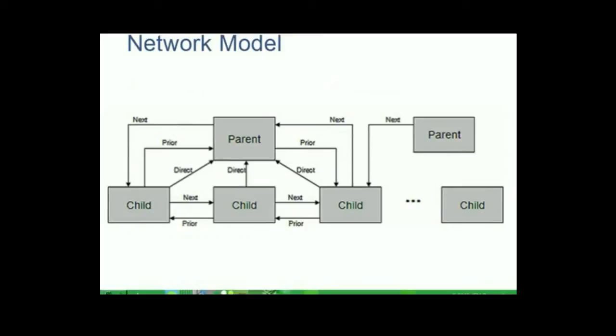In a network model, a child can have more than one parent and each record type points to each other with next, prior and direct pointers. The figure here shows the record types represented by rectangles in a codicil network. A collection of record types and keys form a codicil network or codicil database. To know more about this codicil database and network, refer DB2 Fundamentals book.